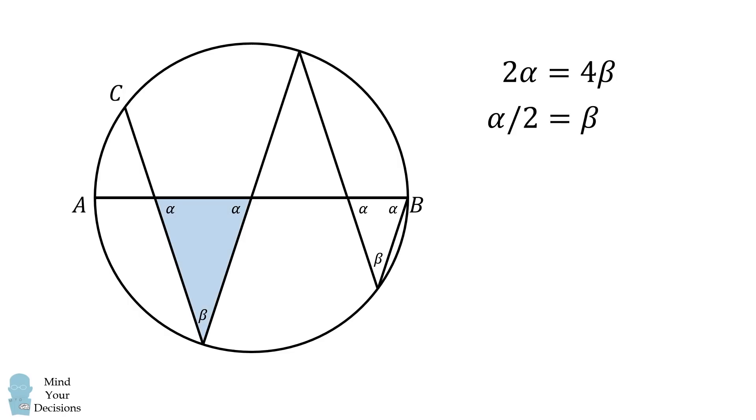Now, we have a triangle, where two of its angles are equal to alpha, and one angle is equal to beta. Thus, we have 2 alpha plus beta is equal to 180 degrees. We can substitute for beta, and then we can solve this equation for alpha.